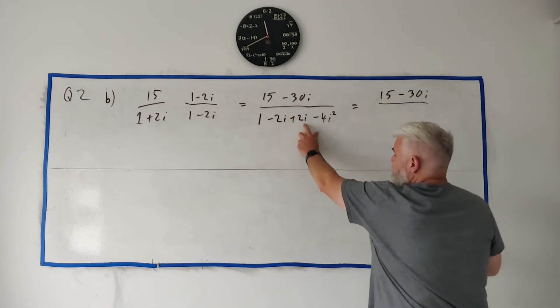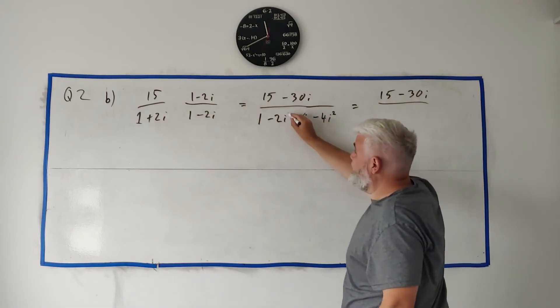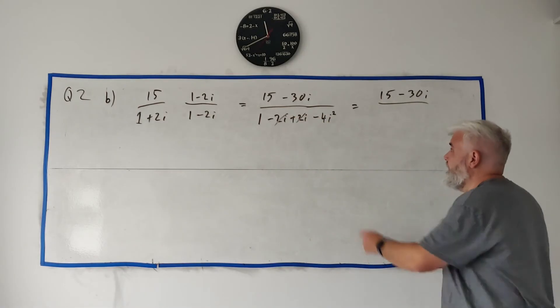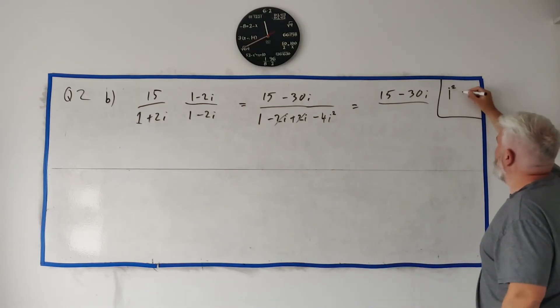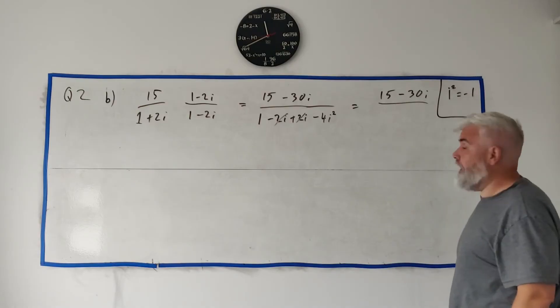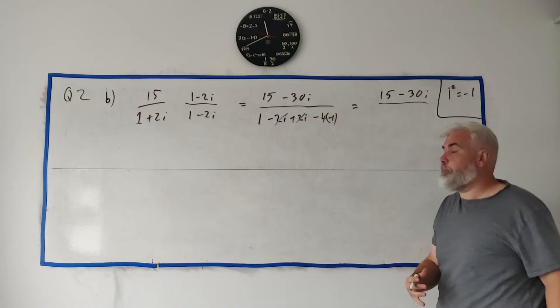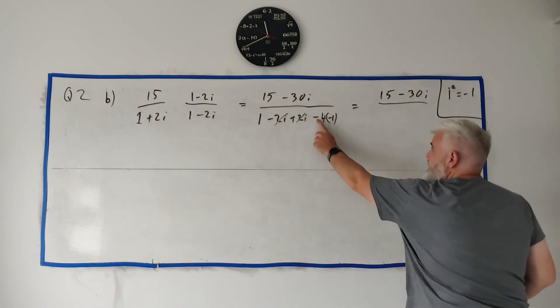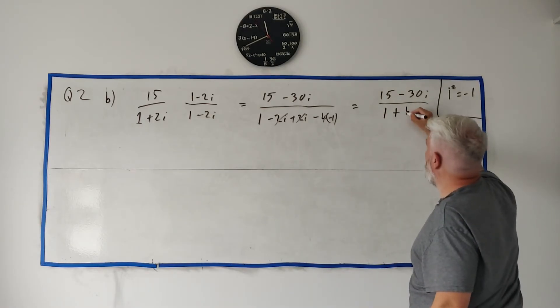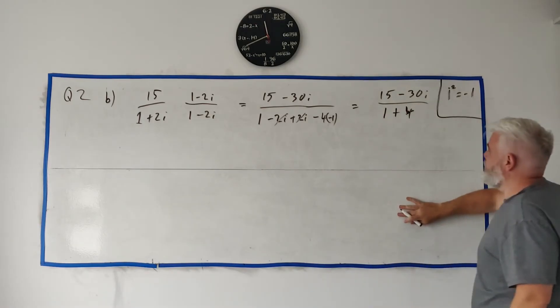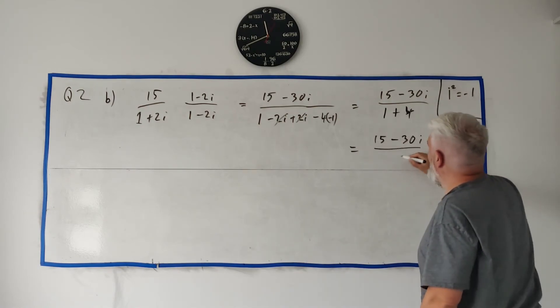Loads of i's. I said there'd be no i's and now there's loads of them. Let's see if they start disappearing. Top row is 15 minus 30i. Bottom row. 2i minus 2i. They cancel each other. Zero. So there's some of the i's done. This i. Remember, a lot of teachers always have up in the corner here. i squared equals minus 1. Don't forget. There's i squared. It's just a minus 1. It's just multiplied by a minus 1. So that's a minus multiplied by a minus. That's just 1 plus 4. Plus 4.